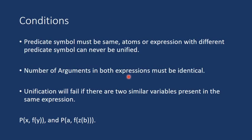Now let us see some conditions or rules for unification. The first condition is that predicate symbol must be same. Atoms or expressions with different predicate symbols can never be unified. That means suppose these two expressions are given. The predicate here is P and here it is also P. So the predicate should be the same.